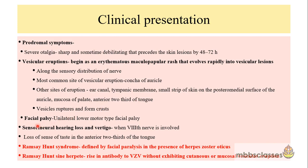The facial palsy which may occur along with the vesicular eruptions is a unilateral lower motor neuron type. The severity of facial palsy in Ramsay-Hunt syndrome is worse than other causes of unilateral lower motor neuron facial palsy. Compared with Bell's palsy, which is another cause, the severity is greater in herpes zoster oticus.